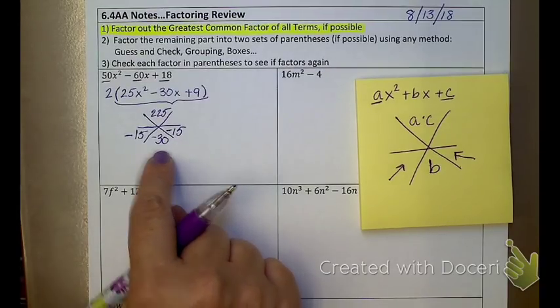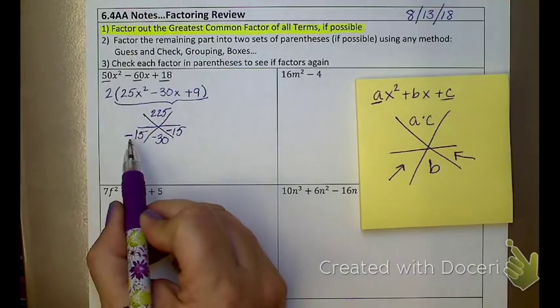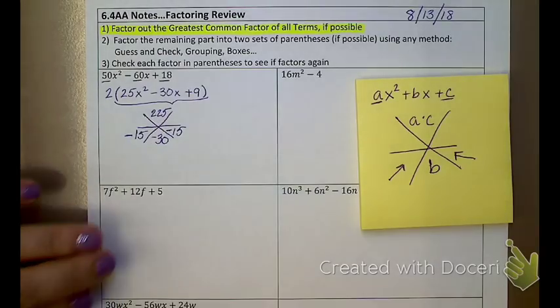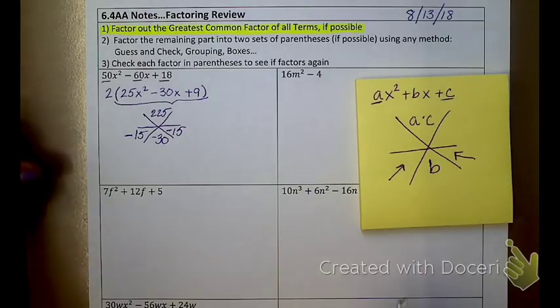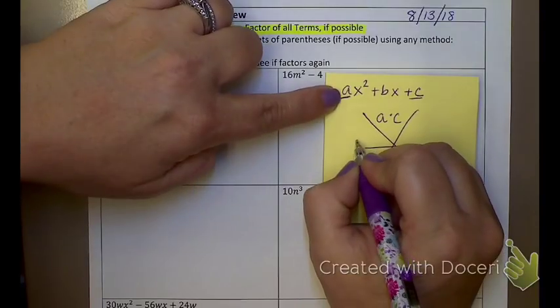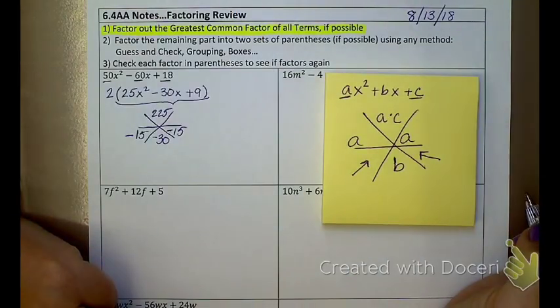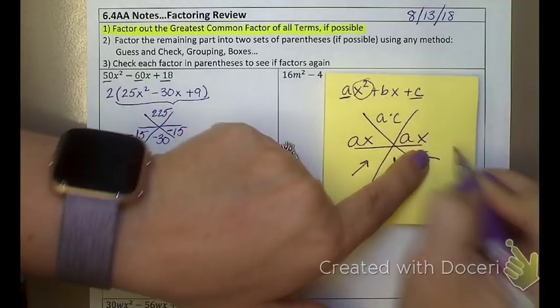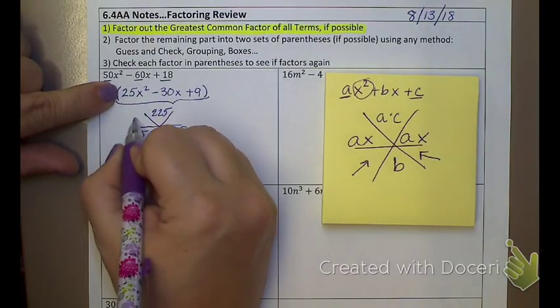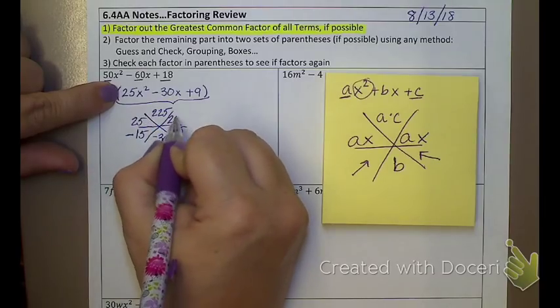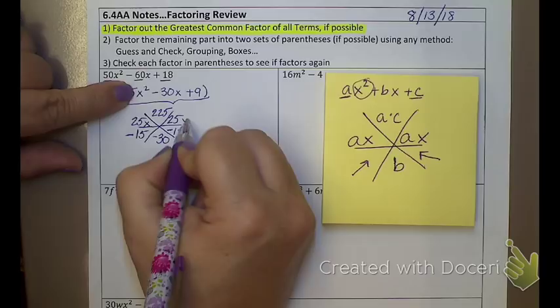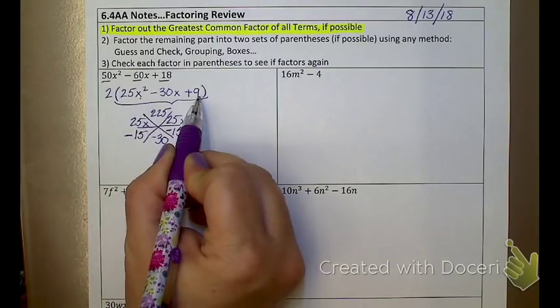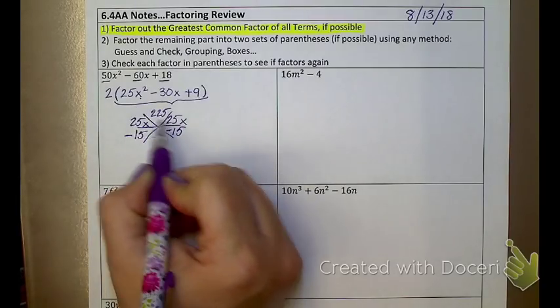Now, I can't just slap on some negatives without checking to see if it still multiplies to get that top number. Does negative 15 times negative 15 still get me a positive 225? Yes. So, I do have my answers. Now, the last two spots, I'm going to take that a value, and I'm going to put a in both of those locations. And then this x squared, I'm going to split it up and give one over here and one over here. So, up here, my a value is 25, so I put 25 on both of those. And that x squared, I split up into x and x. Because technically, my 225, that was 25x squared times 9, so it's 225x squared. I'm just splitting up that x.